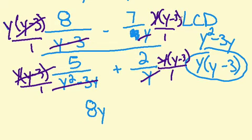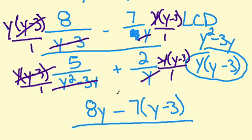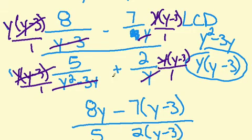7 times all we have left is the quantity y minus 3. Make sure you leave that in parentheses, and we're going to keep that minus sign. 5 with nothing because that becomes a 1 is just 5. And 2 with y minus 3 in parentheses, and we keep the sign.